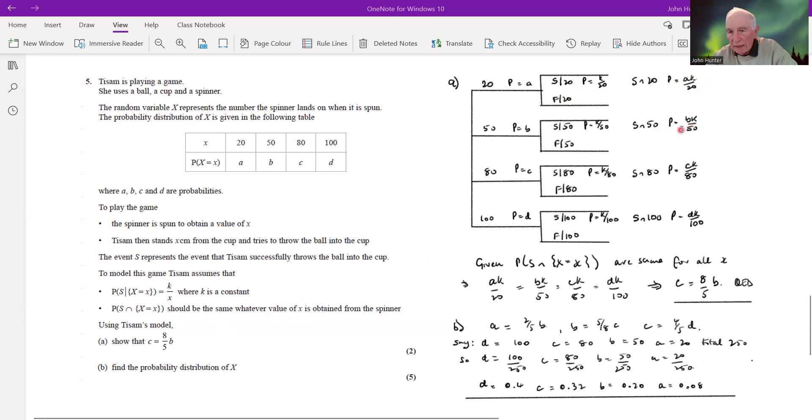So the second one obviously is going to be bk over 50, that's just applying the same multiplication. ck over 80 and dk over 100, and all these are the same value.